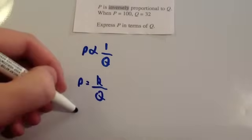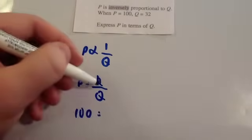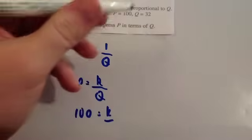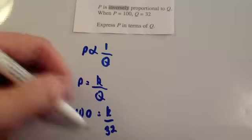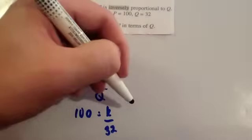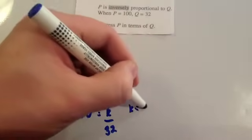And then substitute in the numbers. So, 100 equals K divided by 32. So, then times by 32, so you get K is equal to 3,200.